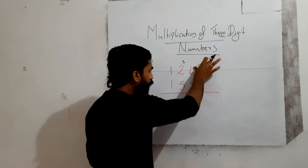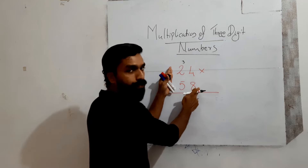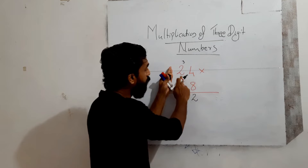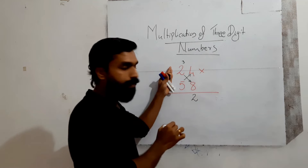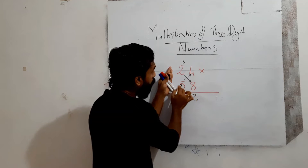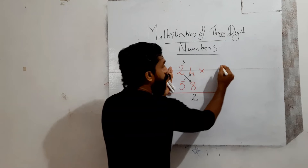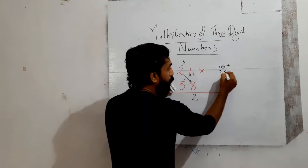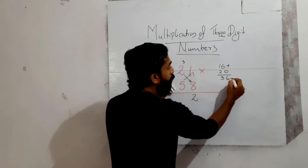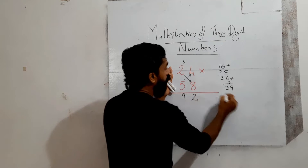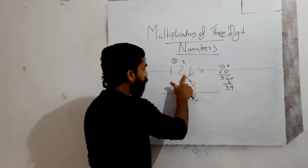Next step: cross multiply the last two digits diagonally. Take the two-digit pairs 24 and 58, and multiply crossly — that means 2 into 8 plus 5 into 4. So 2 into 8 is 16, plus 5 into 4 is 20, which equals 36. Add the carry of 3: 36 plus 3 is 39. Write 9 here, carry over 3.